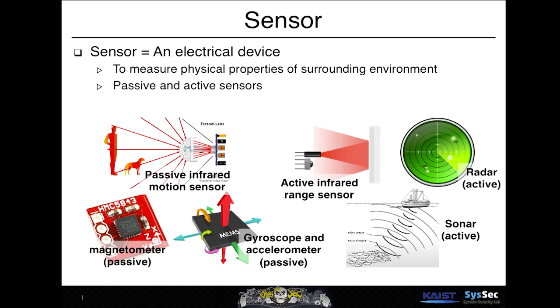Active sensors, on the other hand, emit a signal and measure the environment using a return signal. Active infrared range sensors, radars, and sonars are good examples of active sensors.